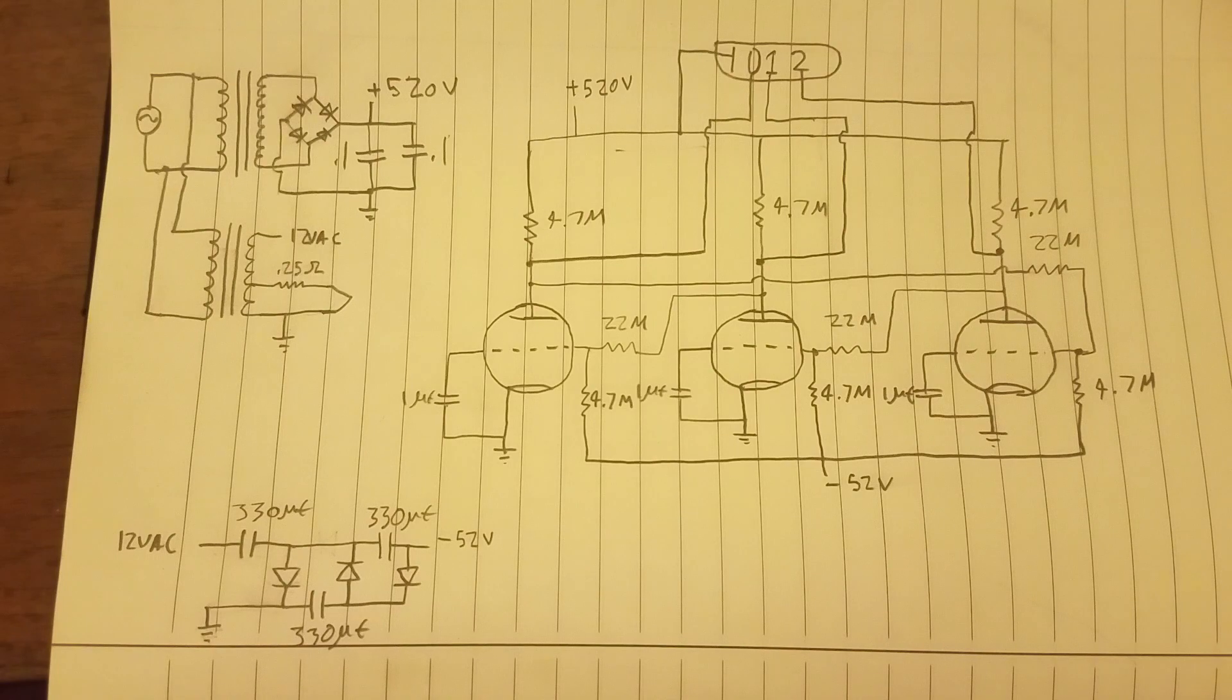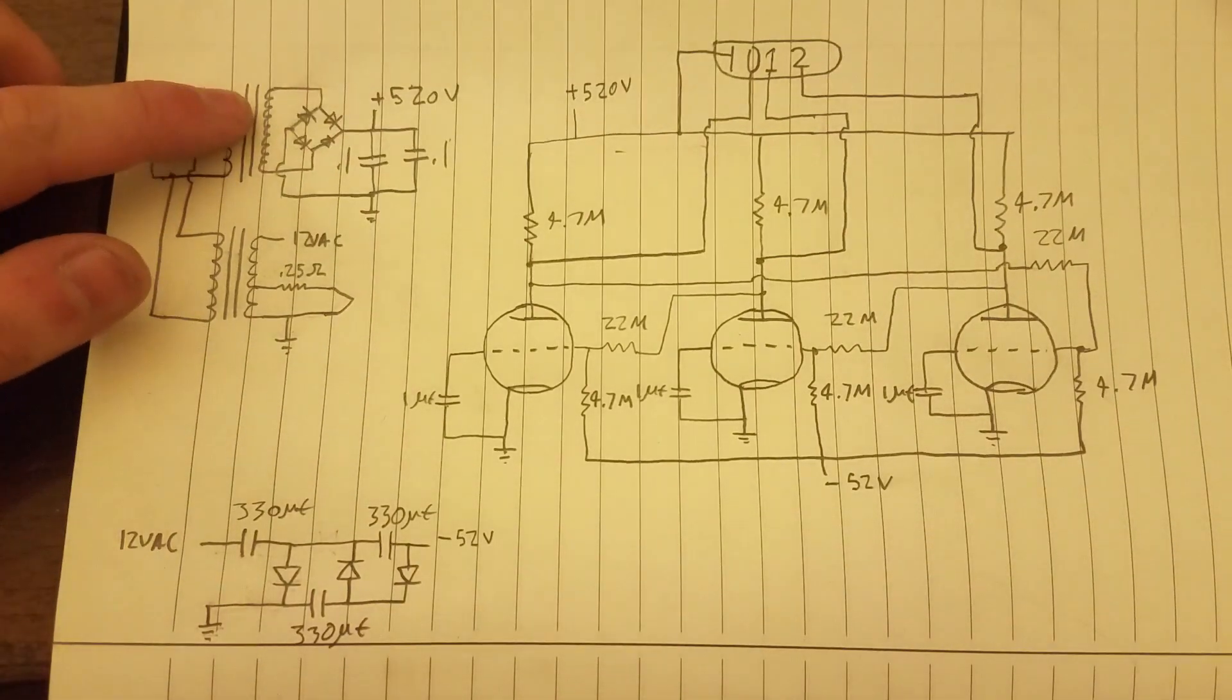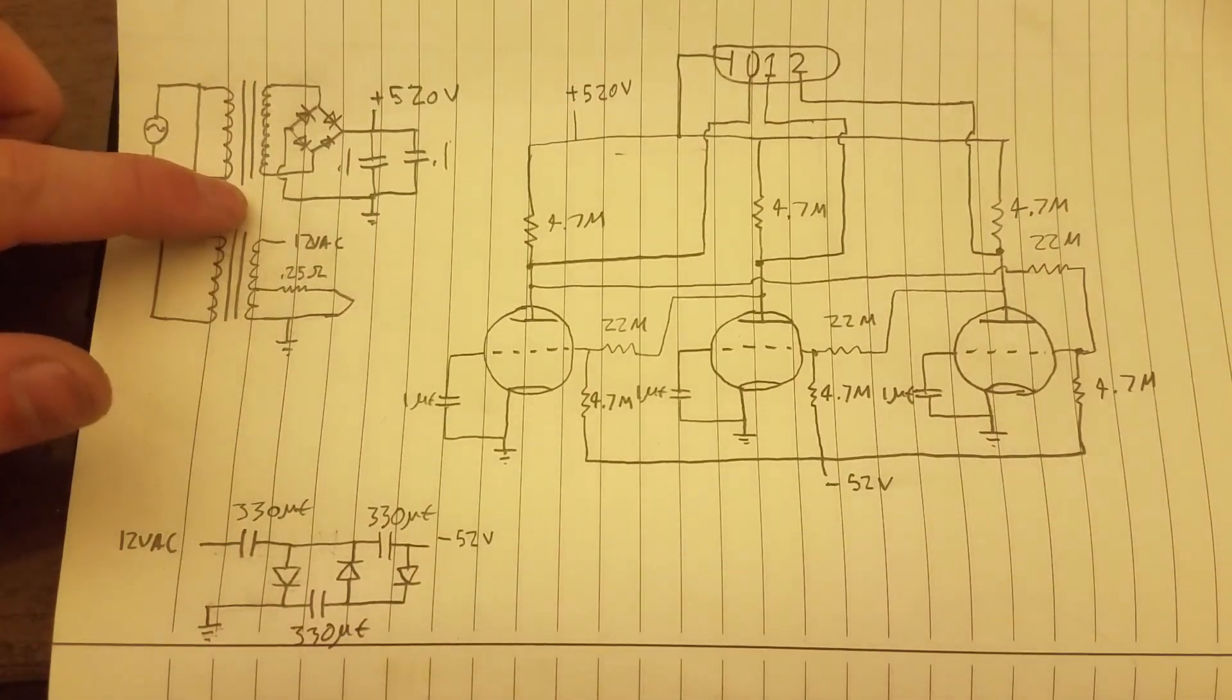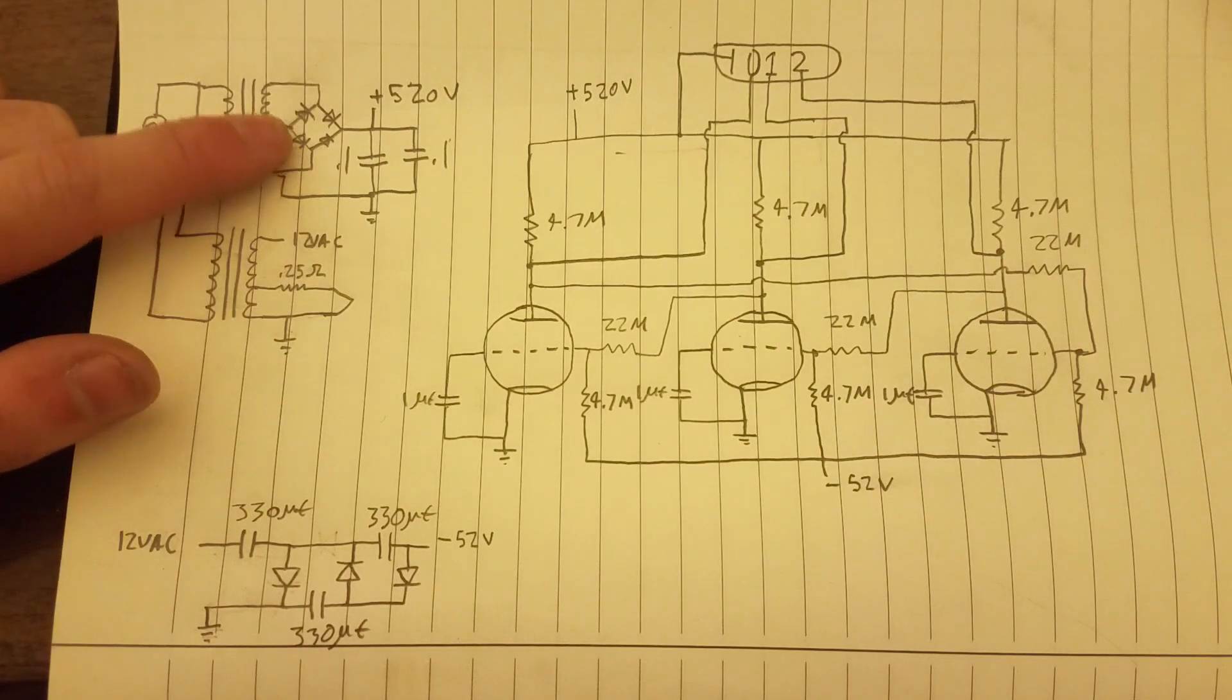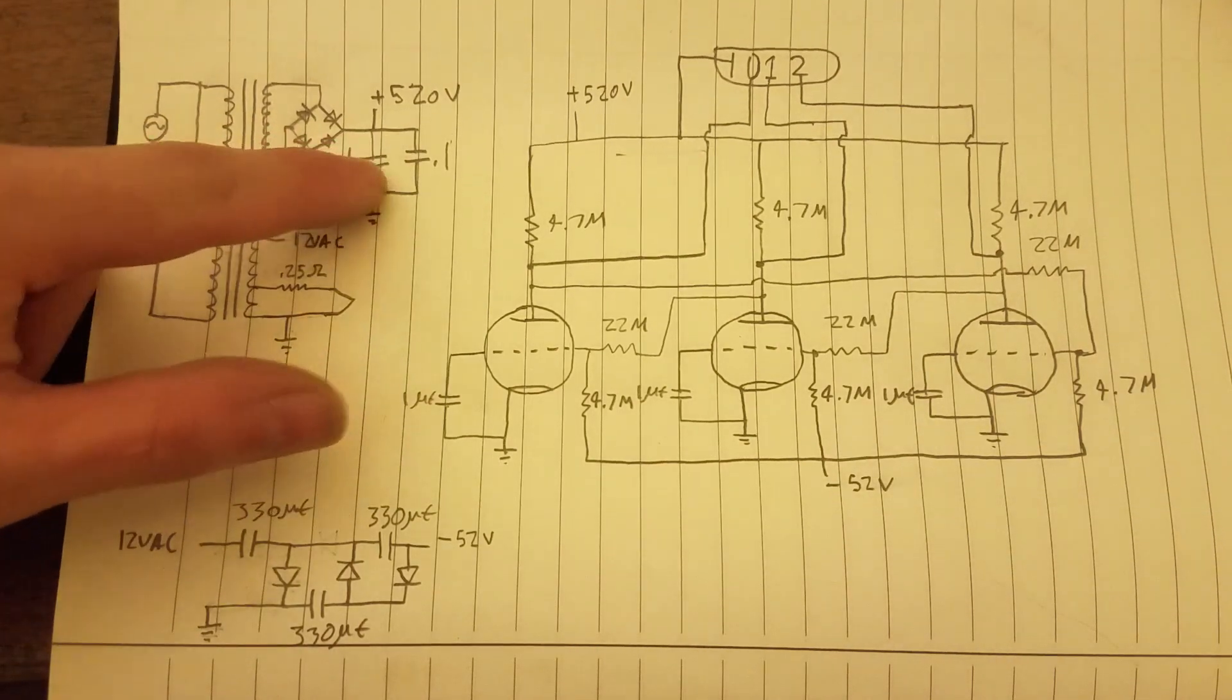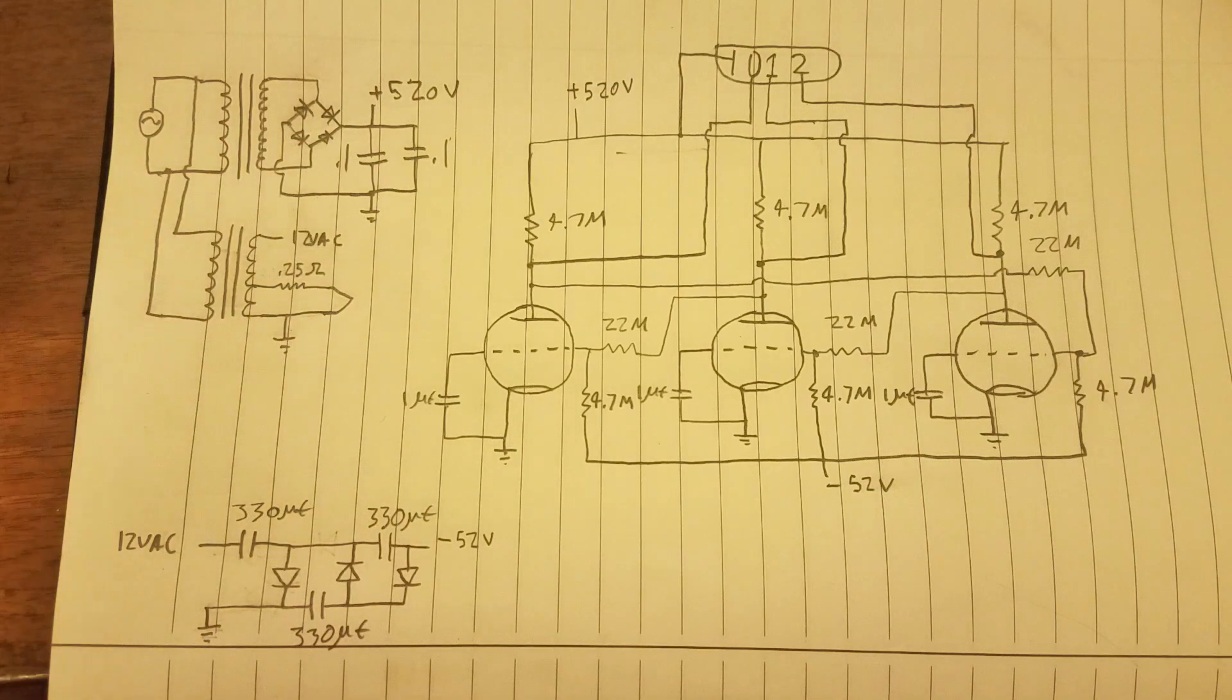Okay, here's the schematic. Here we have the two transformers. The high voltage one is really simple. Just a bridge rectifier and then two 630 volt 0.1 microfarad capacitors right there. Gives us about 522 volts.